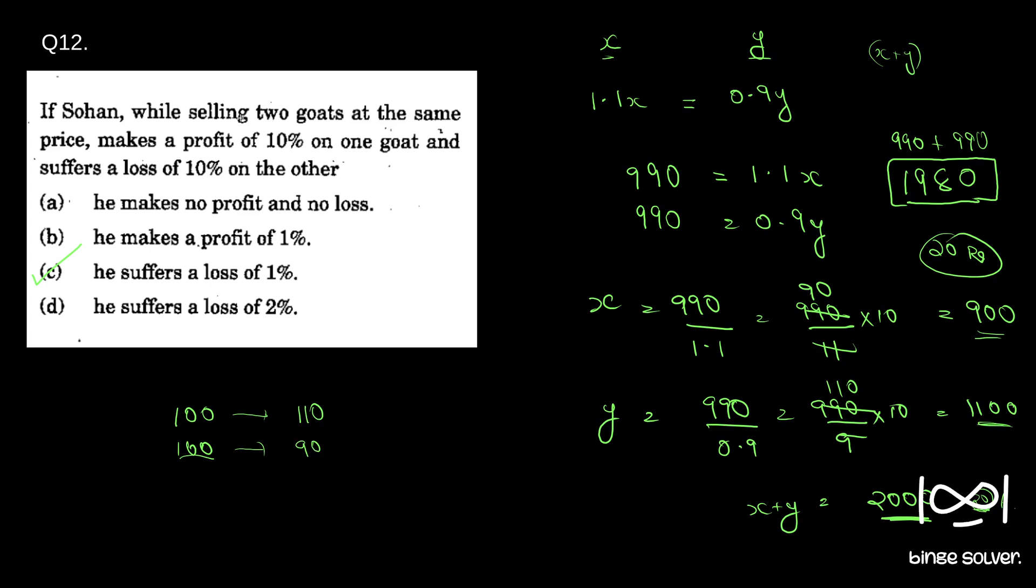If you take it like that, you will get he makes no profit no loss. So if you miss out this point that he sold, while selling two goats at the same price, it's not the original price that is the same but selling price that is the same, you shouldn't miss out that point. If you miss out that point in the exam hall, then you will mess up this question.